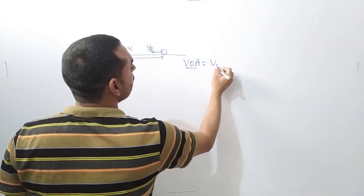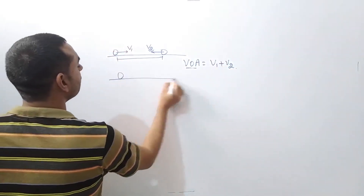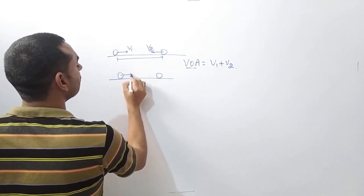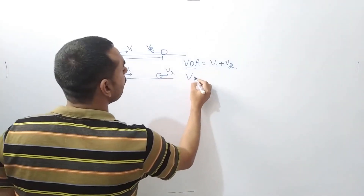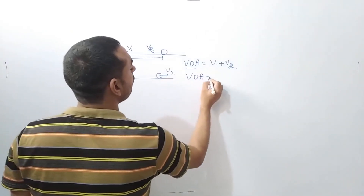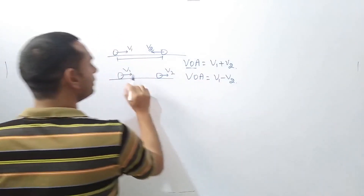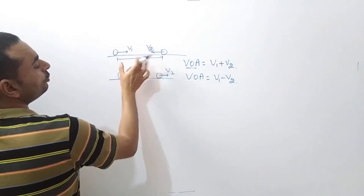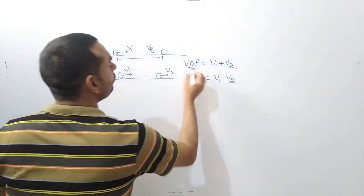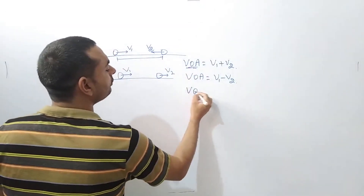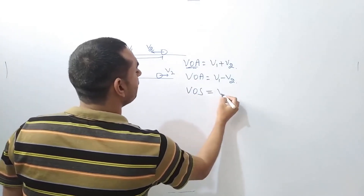Velocity of Approach kya ho jayega? V1 plus V2. Is case me kya ho jayega? Velocity of Approach kya ho jayega? V1 minus V2. This is the line joining the two — uski along jo velocity, relative velocity. Velocity of Separation kya ho jayega is case me? V2 minus V1.